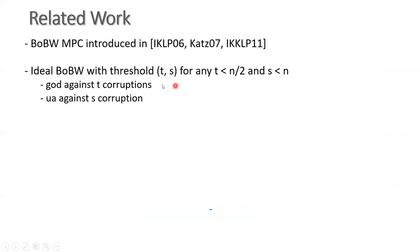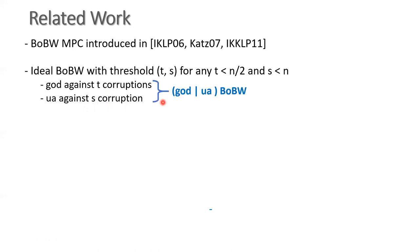This class of best of both worlds MPC was introduced by Ishai, Katz, and others. As per their definition, a best of both worlds protocol is characterized with two thresholds T and S, where T refers to the threshold for honest majority and S refers to the threshold for dishonest majority. To get best of both worlds in the true sense, the protocol should achieve the strongest guarantee of GOD against any T less than N/2, and simultaneously it should give unanimous abort against any S less than N. We refer to this combination as GOD-UA best of both worlds.